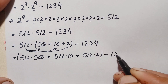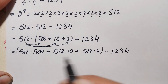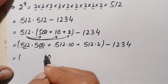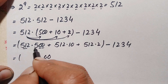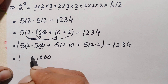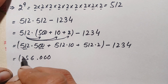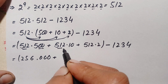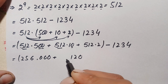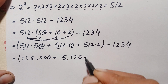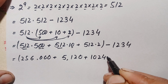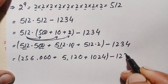Minus 1234. Now let's multiply: 512 times 500 — multiplying 512 by 5 gives 2560, so 512 times 500 is 256,000. Then 512 times 10 is 5,120. Then 512 times 2: 2 times 2 is 4, 2 times 1 is 2, and 2 times 5 is 10, giving 1,024.